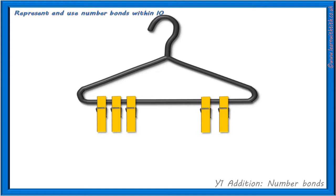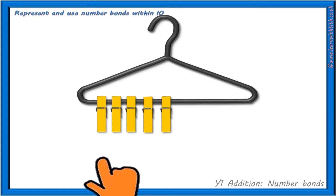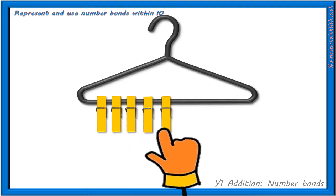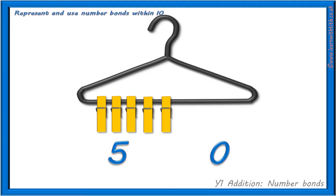I wonder, are there any other addition sums we could write about our 5 pegs? What do you think? Well, we could slide all of our pegs to the same side of the coat hanger. Now we have 1, 2, 3, 4, 5 pegs on the left and 0 pegs on the right. That's tricky. What sum could we write to show this? We could simply write 5 add 0 equals 5.